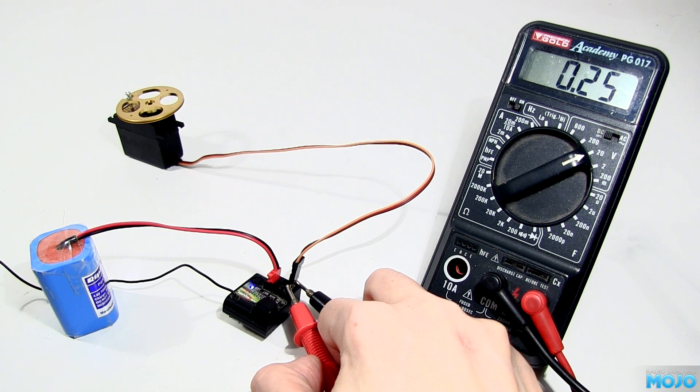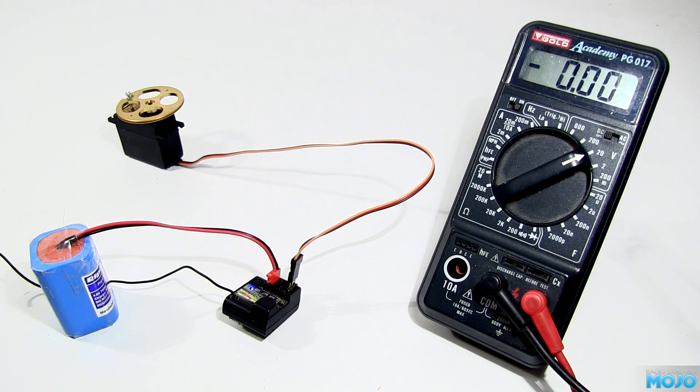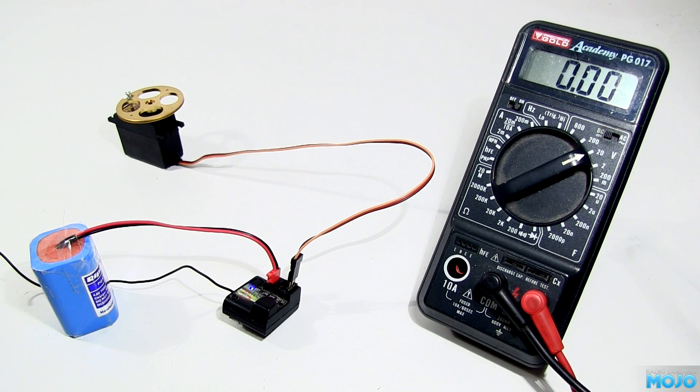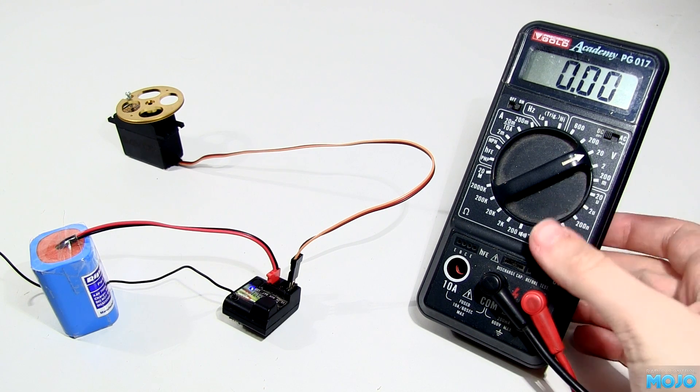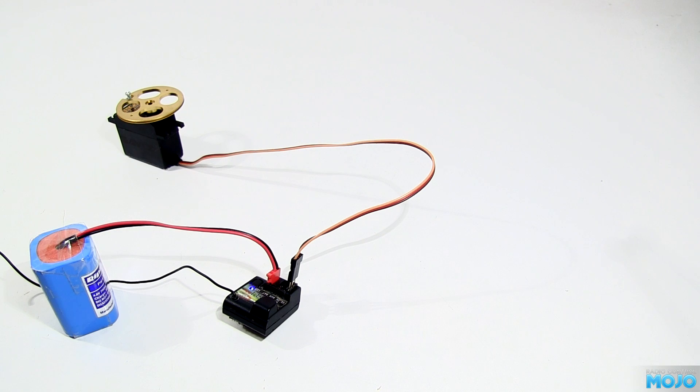You may be thinking the voltage going up and down is telling the servo what position to go to. But it turns out the meter isn't the right tool for the job. It's averaging the voltage over a few hundred milliseconds, which is hiding what's really going on.